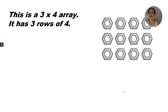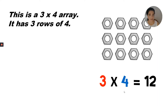This is a three by four array. It has three rows of four. The multiplication equation would look like this: three times four equals twelve. I know that because I can count by fours three times. Four, eight, twelve.